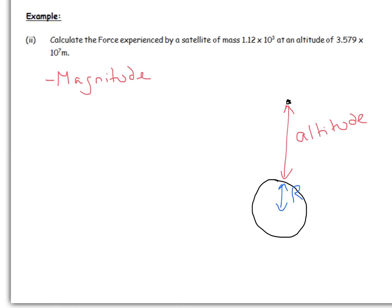So let's first of all calculate what r is. It's going to be the altitude, so 3.579 times 10 to the 7. And then we need to add in the radius of Earth, which is from the previous part of the question, which gives you meters.